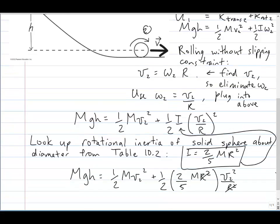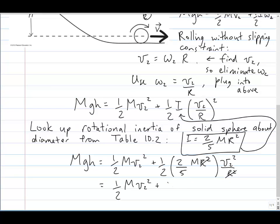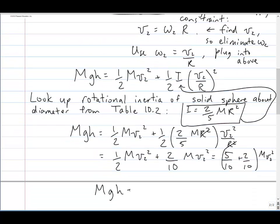And it looks like 1 half mv2 squared plus 1 half 2 fifths m r squared times this v2 squared over r squared. The r squareds cancel, a half times a fifth, fifth is 2 tenths. So we're getting at 5 tenths plus 2 tenths. If we rearrange there, we get 7 tenths.